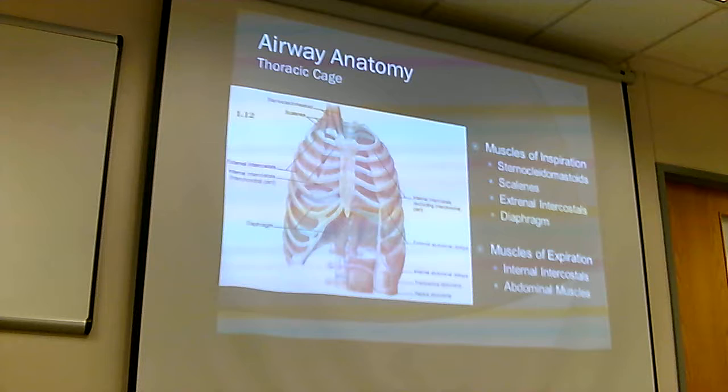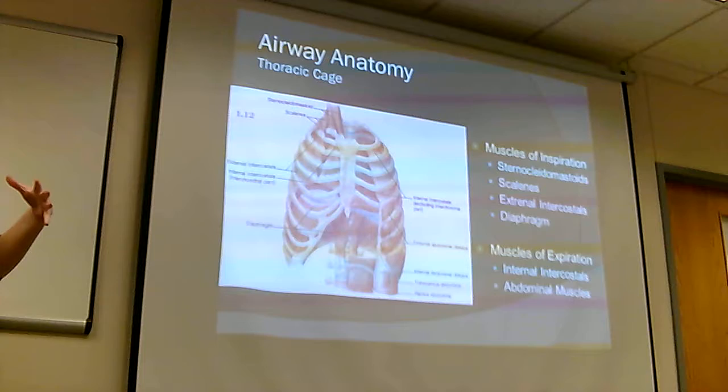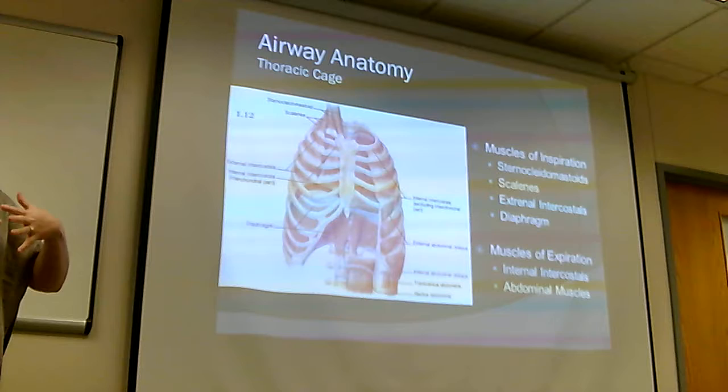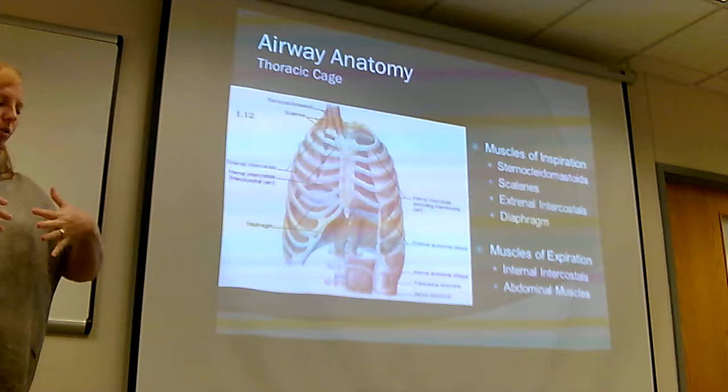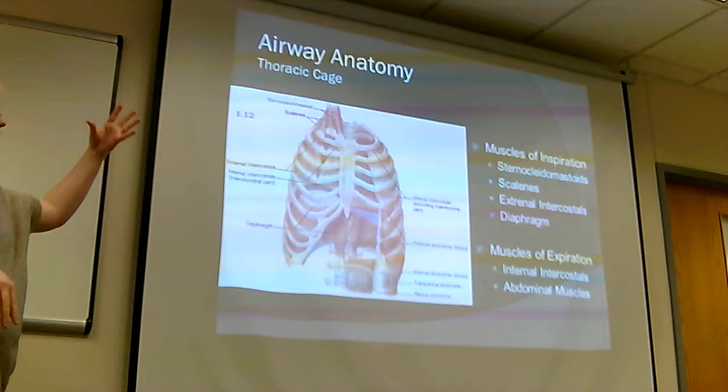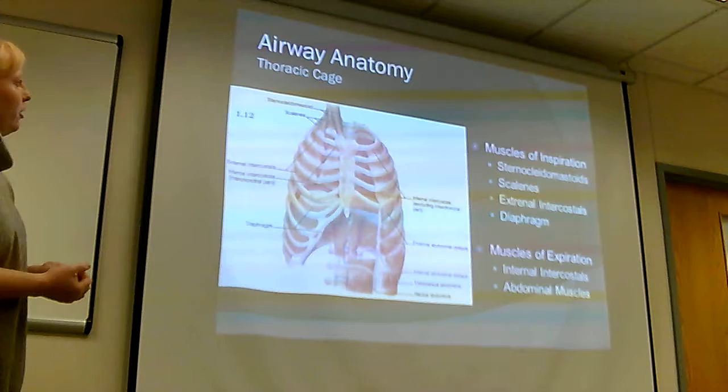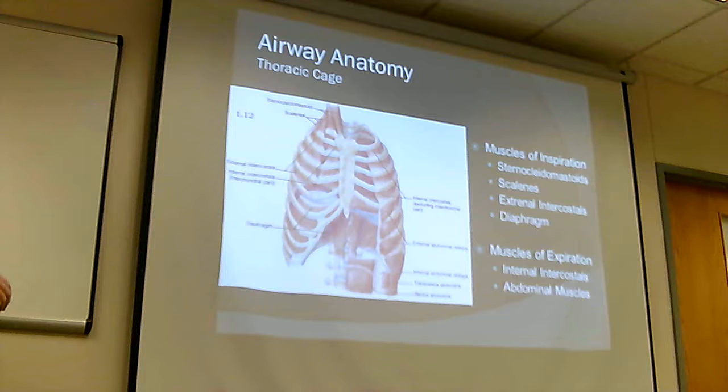Here's another picture of the thoracic cage showing the muscles of inspiration and expiration. The diaphragm moves and causes a breath, but the thoracic cage also moves. When you inspire, the thoracic cage moves up and out, causing negative pressure in the chest that pulls air in through your mouth, nose, and lungs. The muscles that do that are the sternocleidomastoids and the scalenes, plus the external intercostals and the diaphragm — those are the muscles of inspiration.